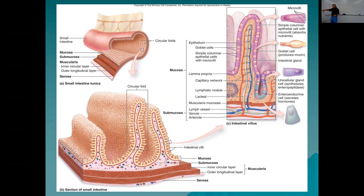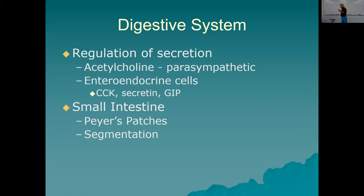Cell types include simple columnar epithelial cells, goblet cells for mucus, intestinal gland cells that synthesize enteropeptidases (inactive protein enzymes), and enteroendocrine cells that secrete the hormones secretin, cholecystokinin, and glucose insulinotropic peptide. Regulation of secretion: acetylcholine — the post-ganglionic parasympathetic neurotransmitter — turns on secretion. CCK, secretin, and GIP are also secreted by enteroendocrine cells. Peyer's patches are patches of MALT tissue.